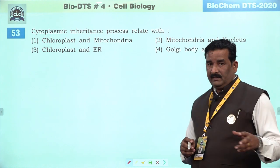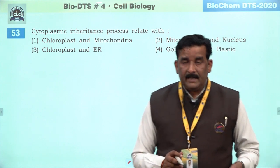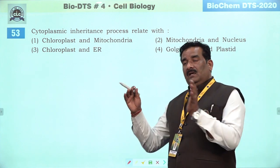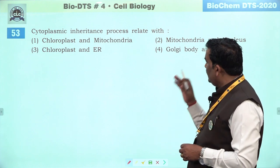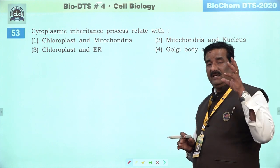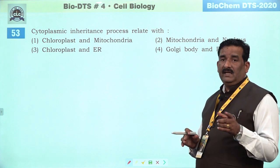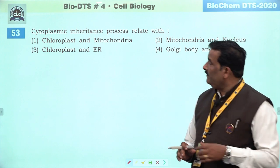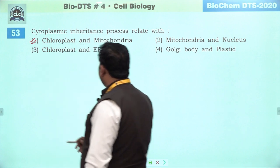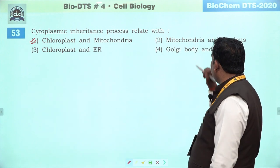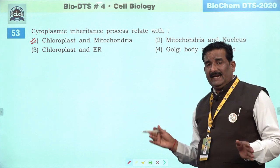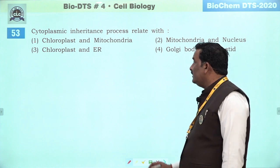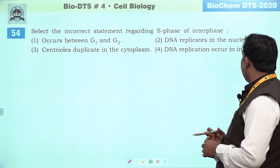Next question: cytoplasmic inheritance relate with. Yeh inheritance se relate karta hai, lekin ek niyam hai ki jahan DNA hoga wahan gene hoga, wahan character hoga. Chloroplast aur mitochondria cytoplasm mein hain — inke andar khud ke DNA hain, means inके khud ke genome hain, gene hain. Isliye yeh cytoplasm ke through bhi inheritance ho sakti hai. ER par DNA nahi hai, Golgi body par DNA nahi hai, nucleus mein DNA hai lekin woh nuclear inheritance karega — cytoplasm nahi. First is the right answer.